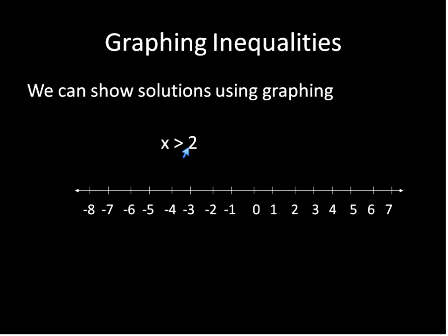So here is how we could do that. For x is greater than positive 2, what we'll do is we will start by making a circle at the point of 2. Because it's not equal to that point, we're going to keep that circle open. And then we're going to draw an arrow to represent that anything greater than 2 is part of this solution. Every single number greater than 2 is part of that solution. So that's how we would graph that inequality.